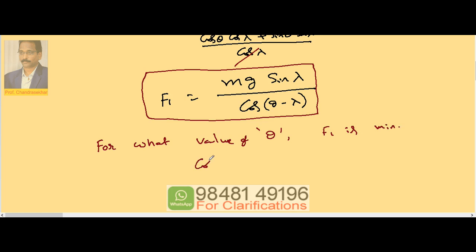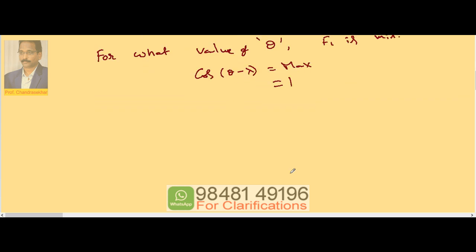This is possible when cos of theta minus lambda is maximum, which is nothing but 1. This implies theta minus lambda is equal to 0 or theta is equal to lambda.